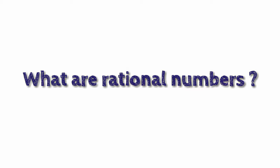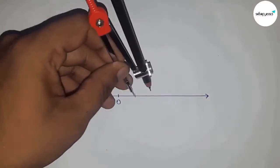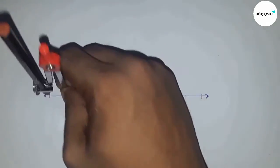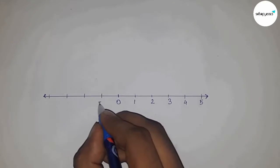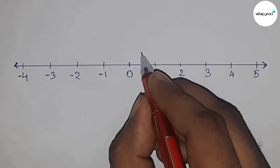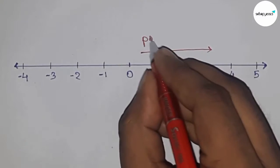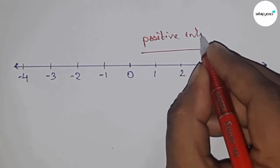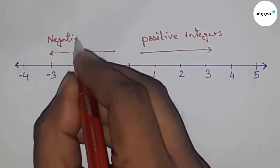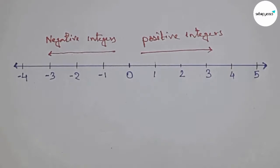Hi everyone, today we're talking about rational numbers. So what are rational numbers? First of all, let's take all the real numbers on the real line. We are familiar with these numbers, and these are called integers. From zero to this side, these are all positive integers, and from zero to this side, these are all negative integers.